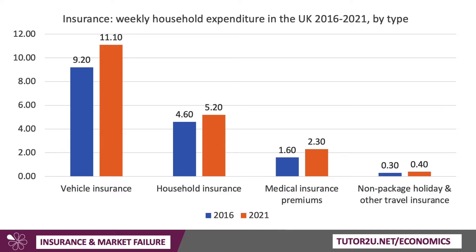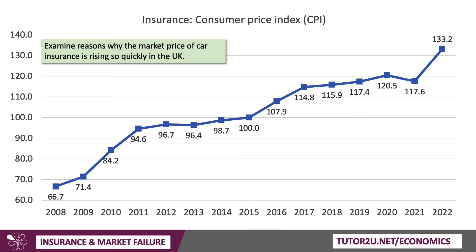Here's how much people spend on insurance per week in the UK. Vehicle insurance is the most expensive — on average people are spending upwards of £500 a year. Household insurance is about half that, medical insurance half that still, and other things like travel insurance are additional. There's also pet insurance. Insurance is a big industry; it employs tens of thousands of people and is a sizable financial service.